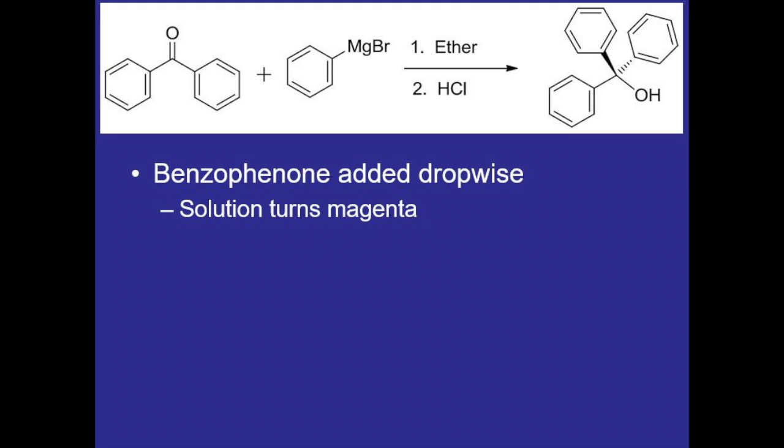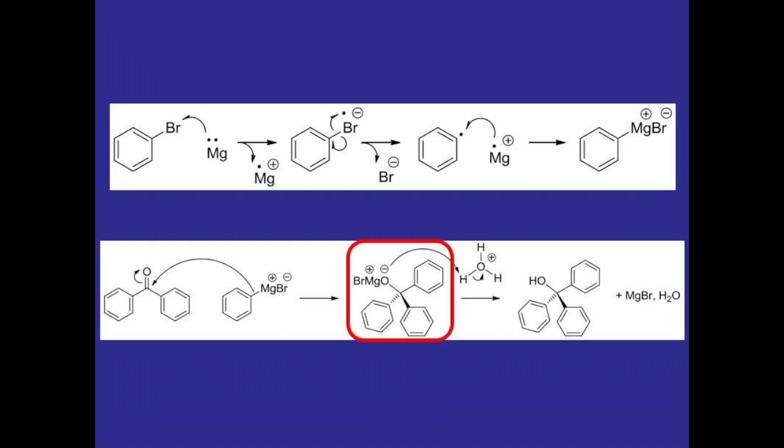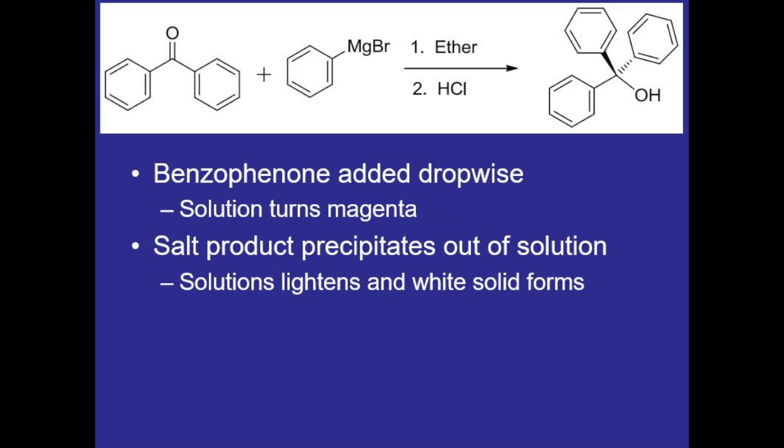As the reaction progresses, the salt product will begin to precipitate out of solution, as was shown in the mechanism. As this happens, the solution will lighten and eventually turn completely white as the salt product forms. Once done, we'll add some HCl to protonate or hydrolyze the product, which will move it into the organic layer, but the HCl will also react with any unreacted magnesium, which will slowly dissolve it in the aqueous layer while releasing off some hydrogen gas.